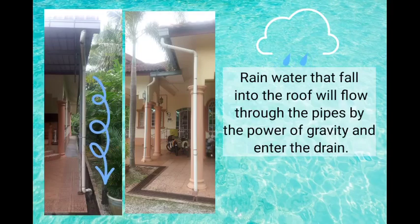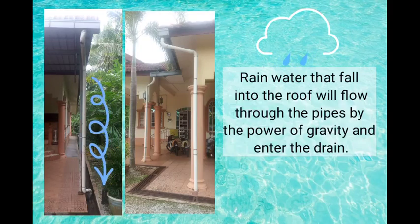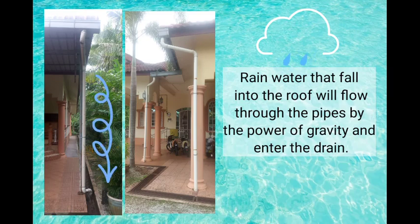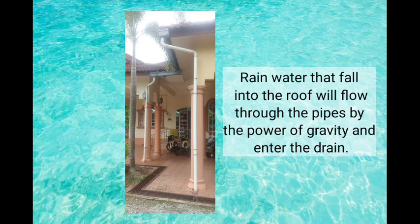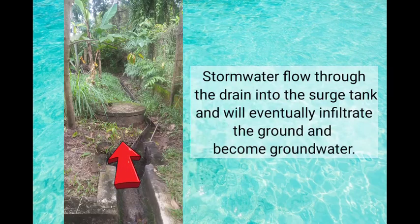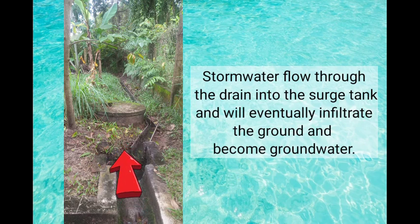Rainwater that falls onto the roof will flow through the pipes by the power of gravity and then enter the drain. Stormwater flows through the drain into the surge tank, and will eventually infiltrate the ground and become groundwater.